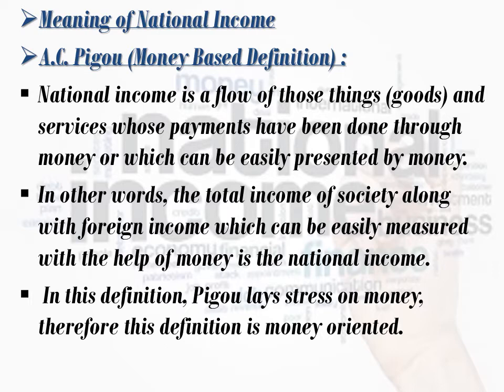In other words, the total income of a society along with foreign income which can be easily measured with the help of money is the national income. National income means income calculated in monetary terms — whether it is total income of the society or foreign income — if we can measure it in terms of money, we call it national income. Pigou lays stress on money, and therefore this definition is money-oriented.